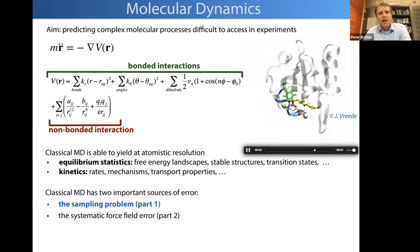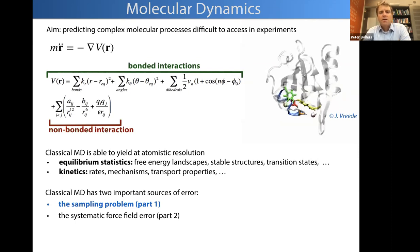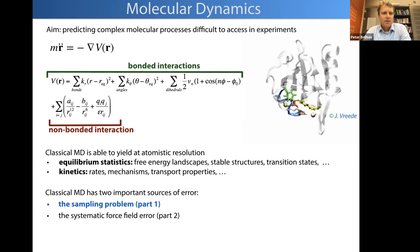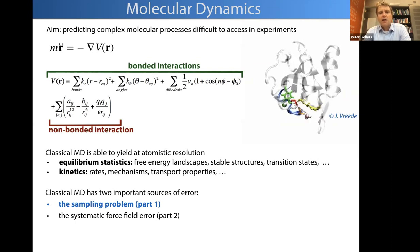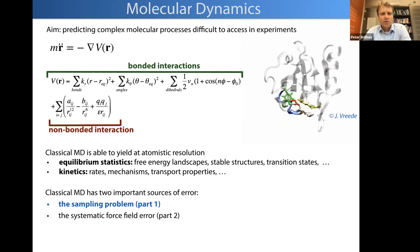Classical MD is capable of resolving systems at atomistic levels. We can do statistics and obtain free energy landscapes, get stability of structures if the force field is right, and even get transition states between two stable states. Classical MD is also capable of predicting kinetics, which is important for observables like rates, but also for understanding mechanistic information of transitions and even transport properties like diffusive behavior.